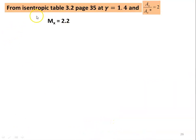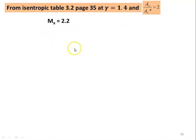From the isentropic table, table number 3.2, page 35, at gamma = 1.4 and Ax/Ax* = 2, we find Mx = 2.2. So the Mach number where the normal shock occurs in the divergent portion is 2.2.